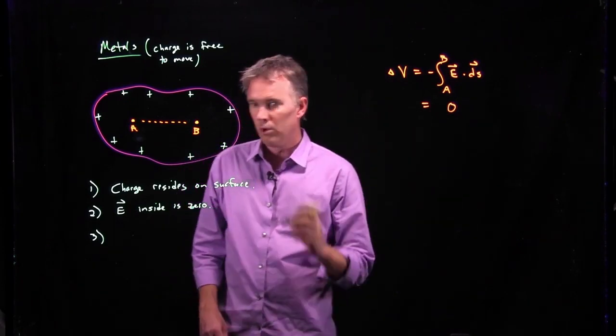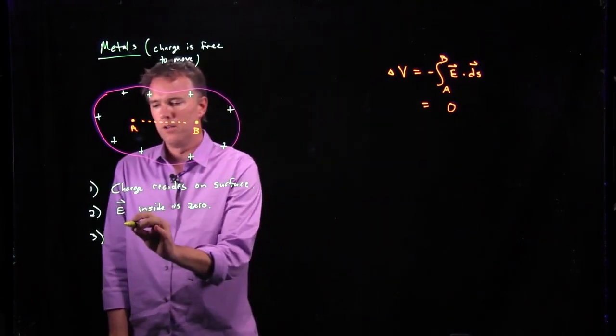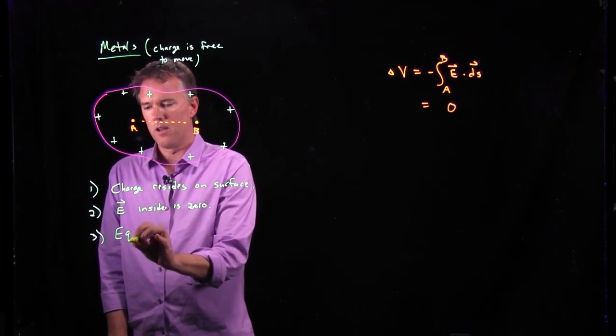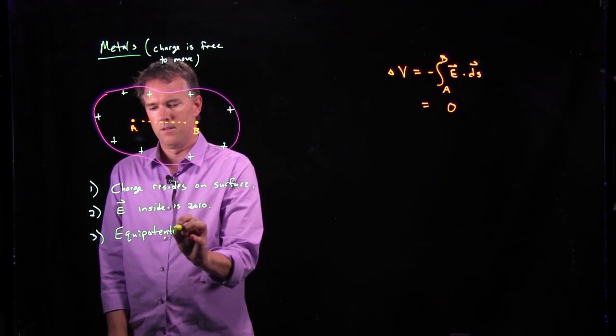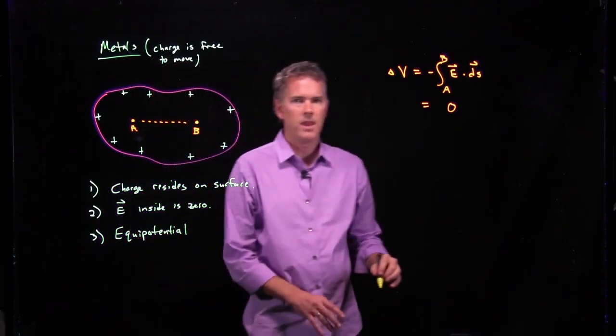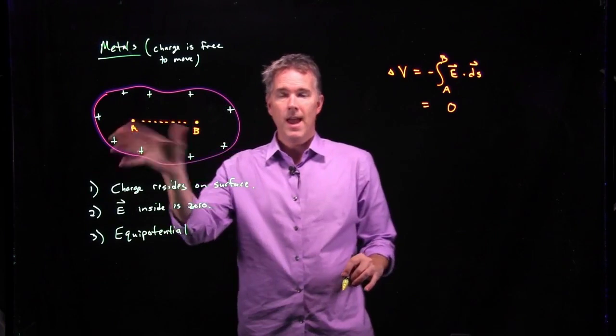And so this is rule number three about conductors. They are equipotentials.